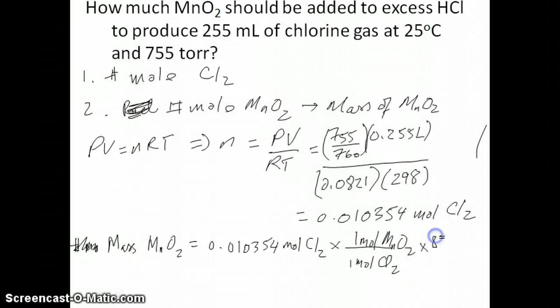To get the mass, I have to use the molar mass of MnO2, which is 87 grams per mole. All the units cancel to give you the mass: 0.901 grams. That's the answer for the question.